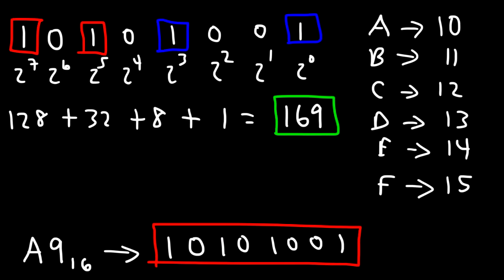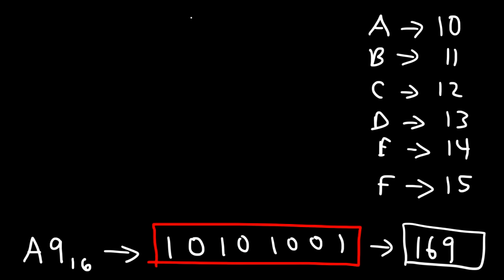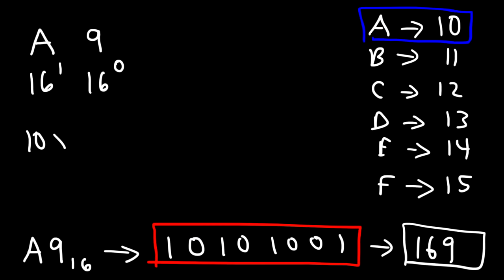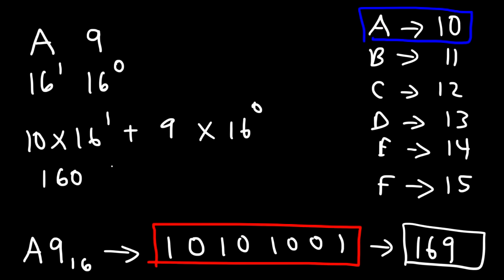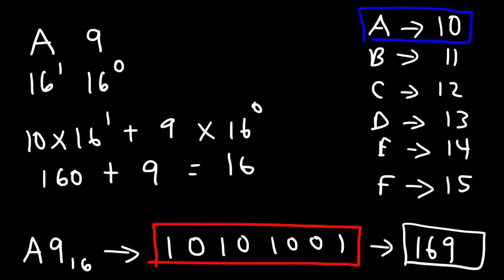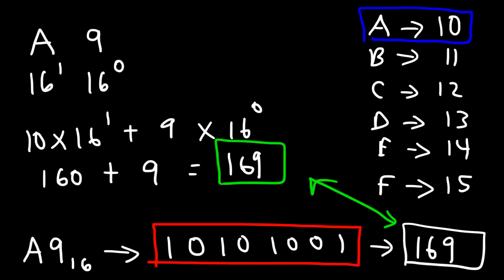Now let's convert the hexadecimal number A9 into decimal to confirm it equals 169. The 9 is multiplied by 16 to the 0 power, and A (which is 10) is multiplied by 16 to the 1st power. So it's 10 times 16 plus 9 times 1, which is 160 plus 9, giving us 169. Because both values match, we know the two representations are equivalent, confirming our answer.